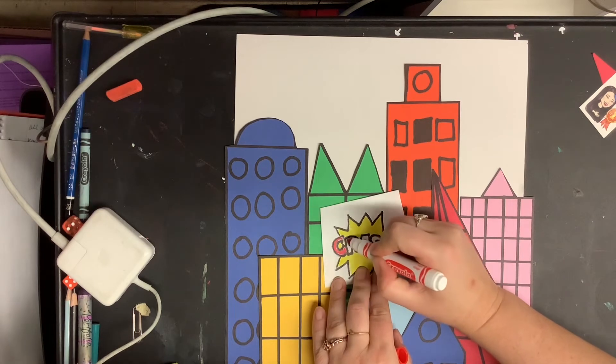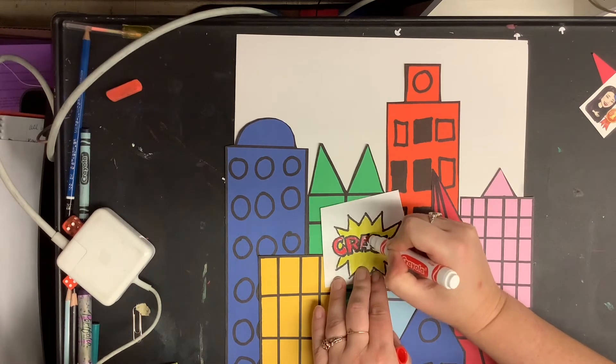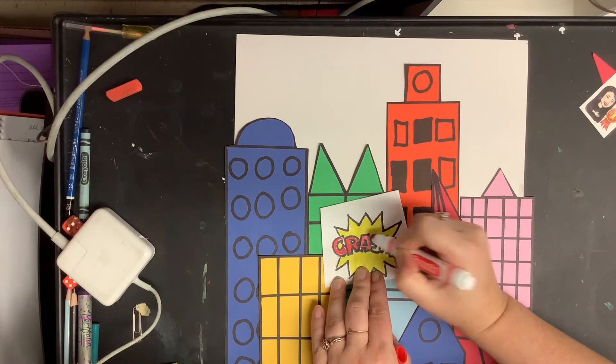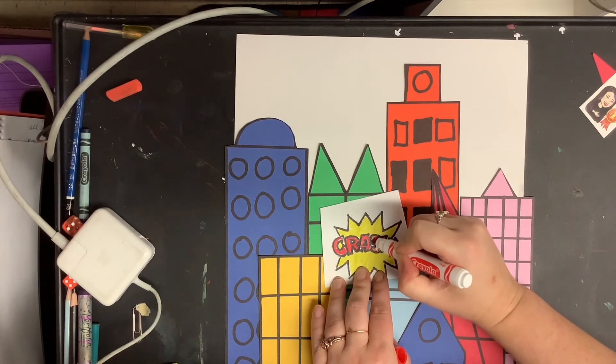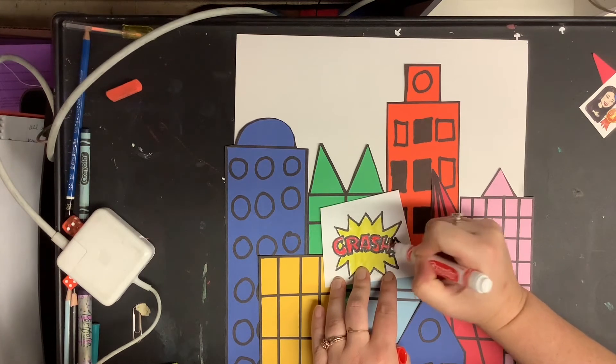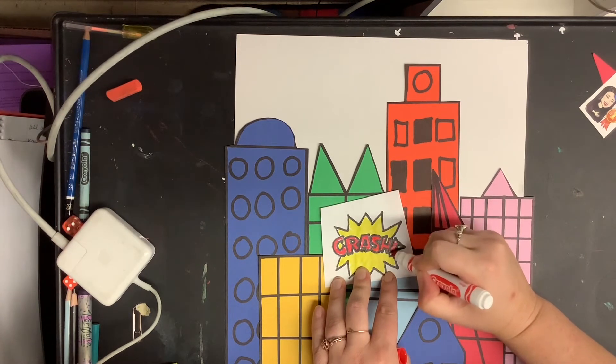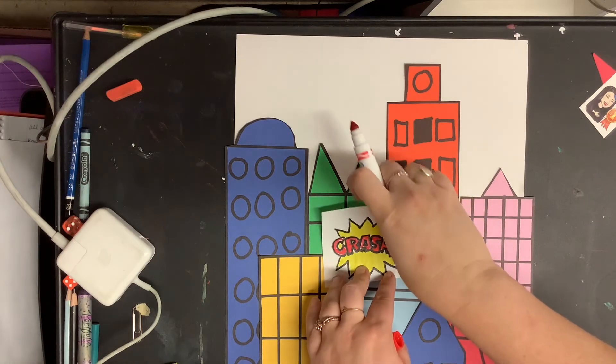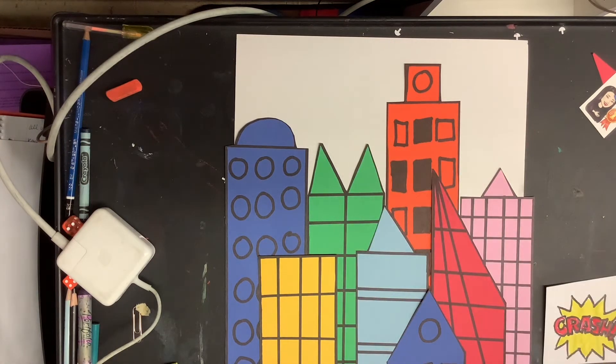So here I have the word crash which is an onomatopoeia word. And then you're gonna cut them out and you're gonna glue them into your sky because we're gonna have our superhero flying in the foreground so we're gonna have these onomatopoeia words in the background.